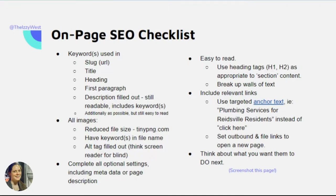We also want to include relevant links — something most Chambers could definitely work on. Link to other web pages on your site when it's relevant, and try to use a phrase or words that describe that page instead of just saying 'click here.' Try to use anchor text when you can. And if you link to anything that goes to another website — which is outbound — or to a file link, or even something you own on a different website like a Constant Contact survey, you still want to check the box that says 'open link in new tab.'